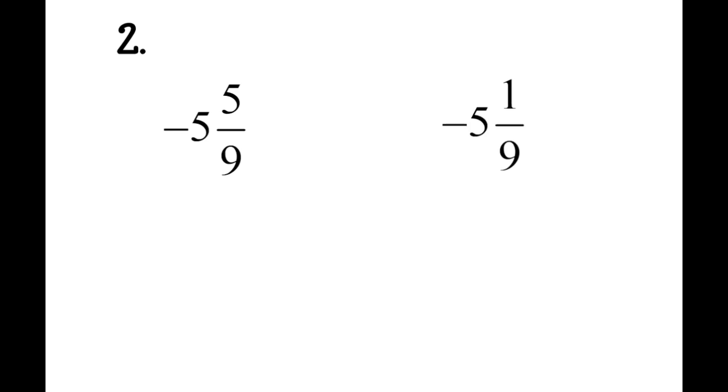Number two is very similar to number one. We have negative 5 and 5/9 and negative 5 and 1/9. So our whole numbers are negative 5. So we look to our numerator, and it's like we have a negative 5 and a negative 1, and which one is less than is negative 5 and 5/9. So we have negative 5 and 5/9 is less than negative 5 and 1/9.